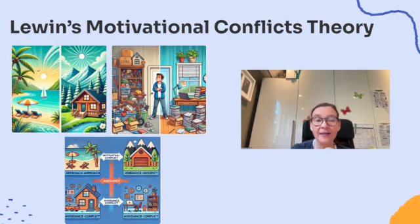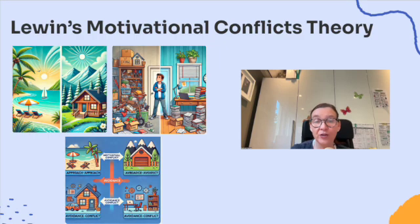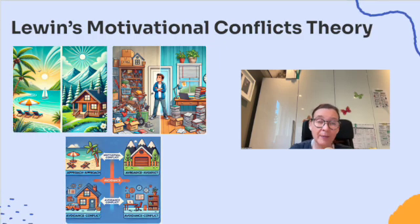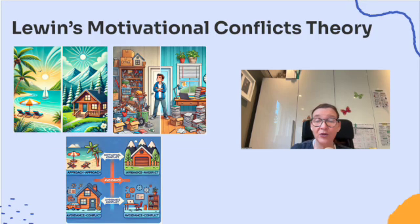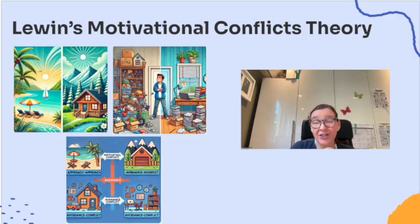Why is Lewin's theory important? It helps us understand the motivational struggles we face in everyday life. Knowing the type of conflict can make decisions easier and help you see the pros and cons more clearly. So next time you're stuck between choices, think about what type of conflict you're facing — it just might help you make a better decision.